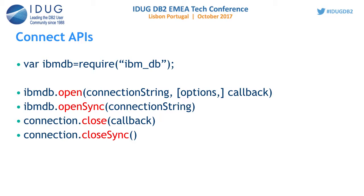If you do not want to use asynchronous APIs, we also have synchronous APIs — each API comes with a Sync suffix at the end. We have close APIs to close connections. Once you open a connection and are done with it, it is recommended to close it to clean the memory allocated to that connection. Close also comes in both synchronous and asynchronous forms.